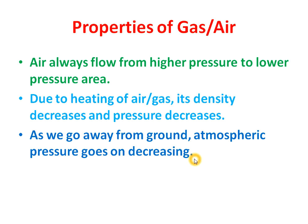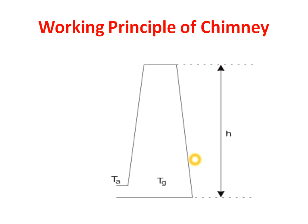These three properties of air help in understanding the working principle of a chimney. This is the diagram of a chimney. This is the inlet of the chimney, from where hot gases or air come inside. When a boiler is connected, hot gases from the boiler enter the chimney at a temperature of around 200 to 250 degrees Celsius, while the outside atmospheric air has a temperature of about 35 degrees Celsius.